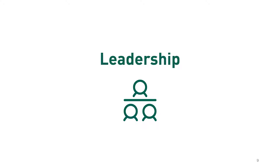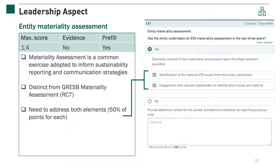The first aspect of the management component is leadership. This aspect evaluates how the entity integrates ESG into its overall business strategy. The first indicator of this aspect is on entity materiality assessment. A materiality assessment is an exercise widely used to inform sustainability reporting and communication strategies. This indicator is distinct from the GRESB materiality assessment indicator RC7 in the reporting characteristics, which provides a standardized materiality assessment used for materiality-based scoring, whereas this indicator assesses whether the entity undertook its own materiality assessment.